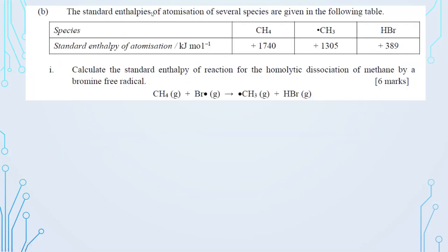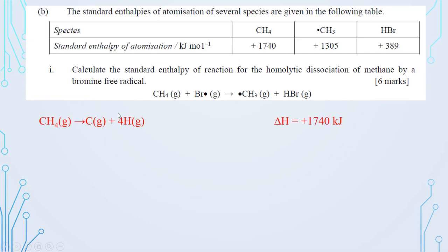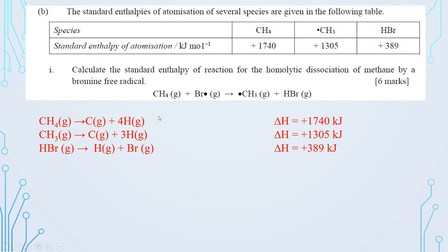Part 3b: given standard enthalpy changes of atomization — CH₄(g) = +1740, CH₃ radical = +1305, HBr = +39.0 kJ/mol. Calculate the standard enthalpy change for homolytic dissociation of Br₂ in the reaction CH₄ + Br₂ → CH₃• + HBr. Write atomization equations: CH₄ → C + 4H, CH₃ → C + 3H, HBr → H + Br. A radical has a single unpaired electron; its mass is negligible, so we ignore it.